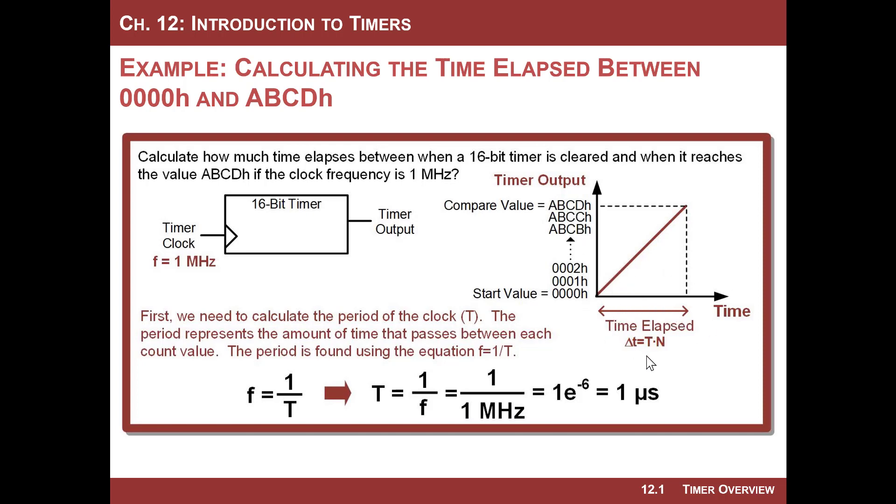Well, this calculation is nothing more than taking the period of the clock multiplied by the number of counts that have passed, which is ABCDh. Now, we'll probably convert that to decimal to make it easier, but let's start with figuring out what the period of the clock is. So I take 1 over the period is equal to the frequency. Your frequency is equal to 1 over the period. Let's flip that around because we're solving for period. So basically, the period of the clock is nothing more than 1 over 1 megahertz, which happens to be 1 microsecond.